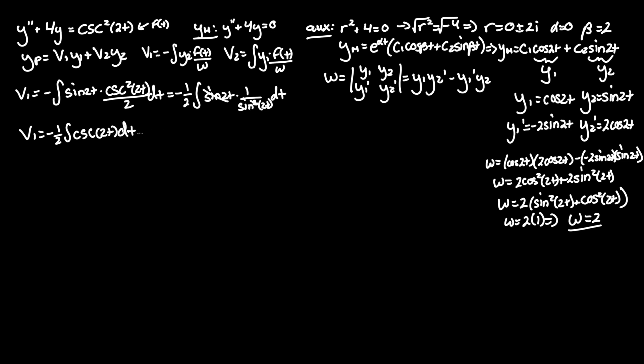And unfortunately, this is one property that you have to memorize, but the integral of cosecant is ln cosecant minus cotangent of any internal variable. And don't forget that since it's being multiplied by 2, you've got to bring that as a denominator in front. So we get negative 1 fourth ln absolute value of cosecant 2t minus cotangent of 2t. And that's it for v1.